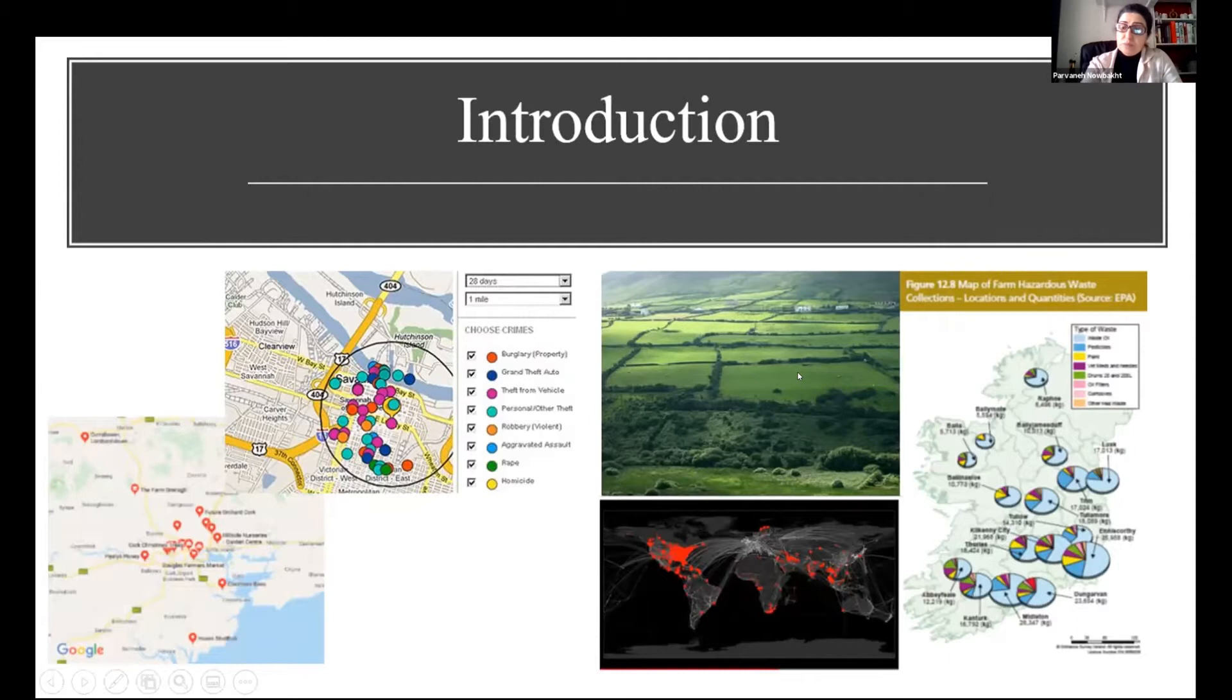Obfuscation methods have been developed and implemented to preserve individual privacy by processing or degrading quality of location information while maintaining the spatial properties of geographical data. This method is widely used in healthcare or criminology location-based services, but not much in agriculture data.